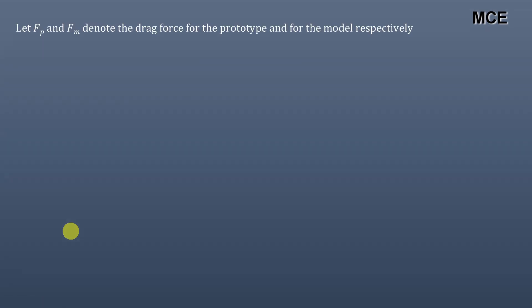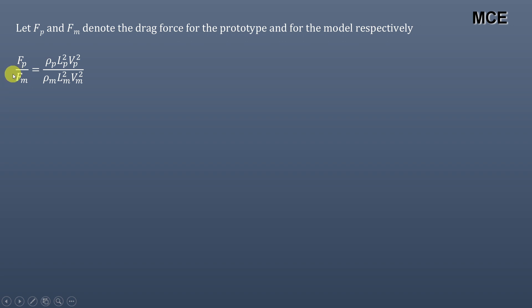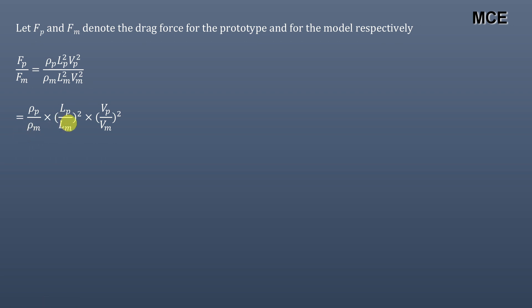To find the ratio of drag force between the prototype and the model, let Fp and Fm denote drag forces for prototype and model respectively. Taking the ratio: Fp/Fm = (ρp × Lp² × Vp²) / (ρm × Lm² × Vm²), which can be rewritten as (ρp/ρm) × (Lp/Lm)² × (Vp/Vm)².